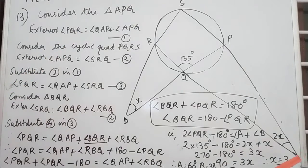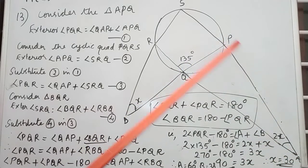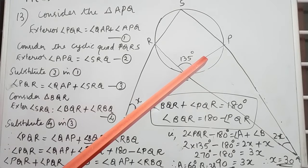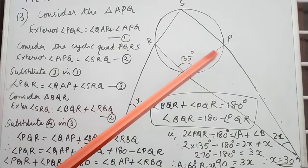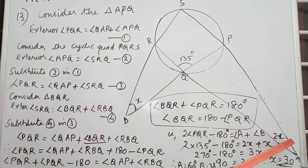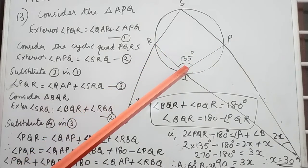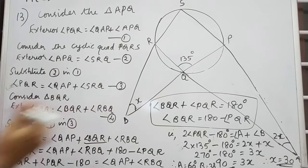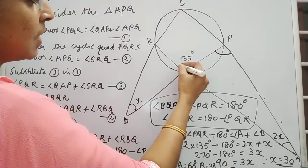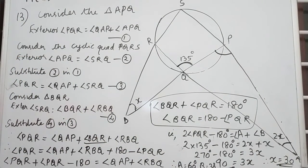Consider triangle APQ. If you are considering this triangle, exterior angle PQR will be equal to the sum of opposite interior angles. That means PQR is equal to angle QAP plus angle APQ — that is the sum of these two angles. So the exterior angle equals the sum of these two angles. That is equation number 1.